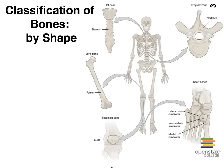Short bones are called short because there's essentially no length to them. Then we have flat bones. A lot of the bones in your skull — your cranial bones — are considered flat bones, classified flat because they look flat. Your sternum is another good example, as are your ribs. And then there's a whole pile of bones we don't quite know what to do with, so we put them in a category called irregular bones. Your vertebrae are a good example, as are your pelvic bones.